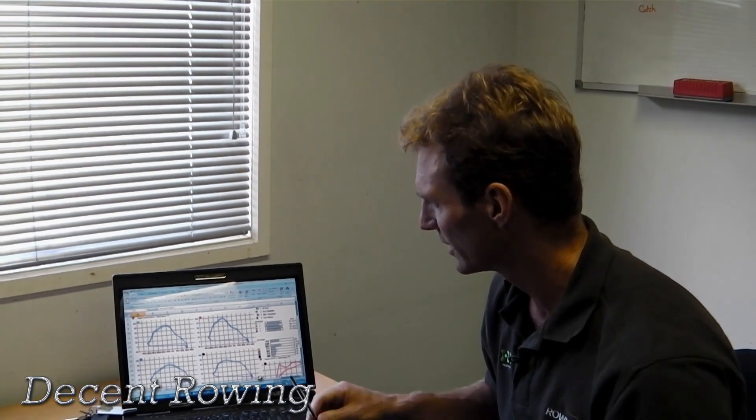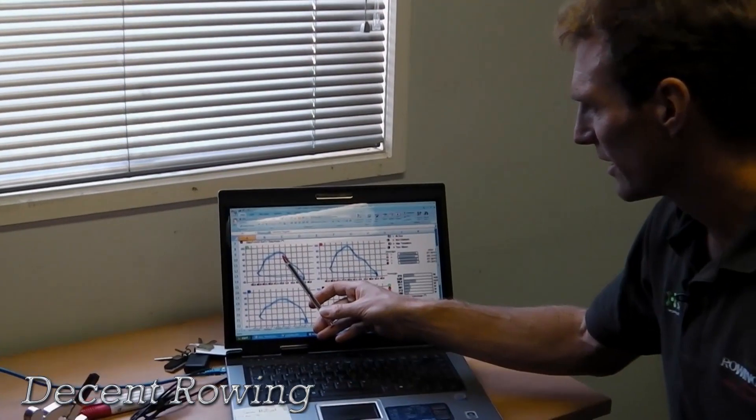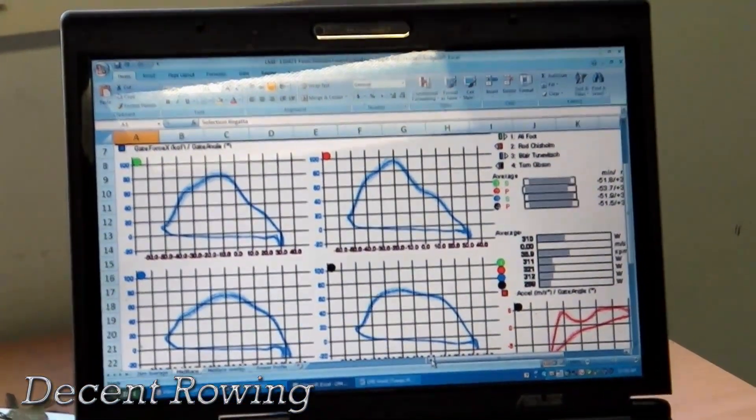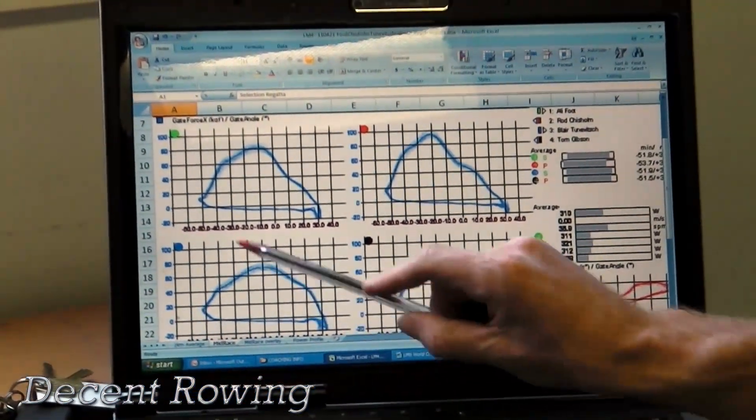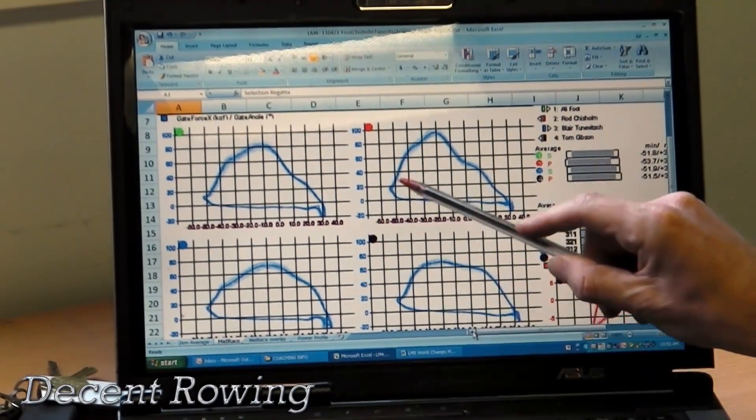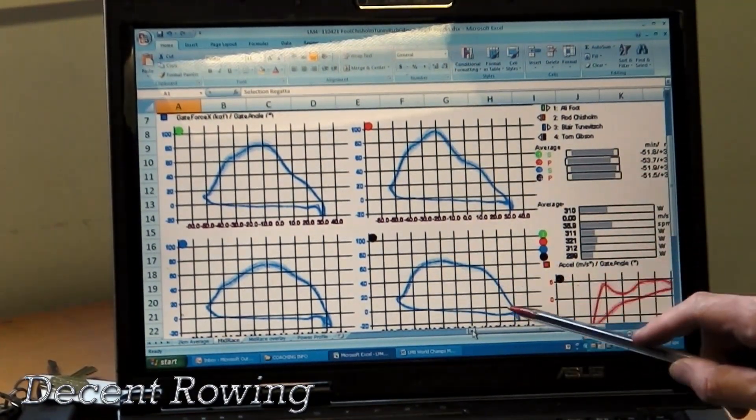I'll give a little insight into how we can look at power curves in rowing. If we look at a chart here, this is in a lightweight four, and this is a power curve of each person in that particular boat. As you can see, each of the curves are somewhat different in their applications.